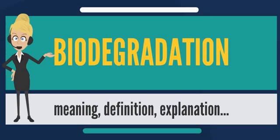Biodegradability can also be measured by anaerobic microbes and the amount of methane or biogas they are able to produce. In formal scientific literature, the process is termed bioremediation. The first known use of the word in biological text was in 1961, when it was employed to describe the breakdown of material into the base components of carbon, hydrogen, and oxygen by microorganisms.